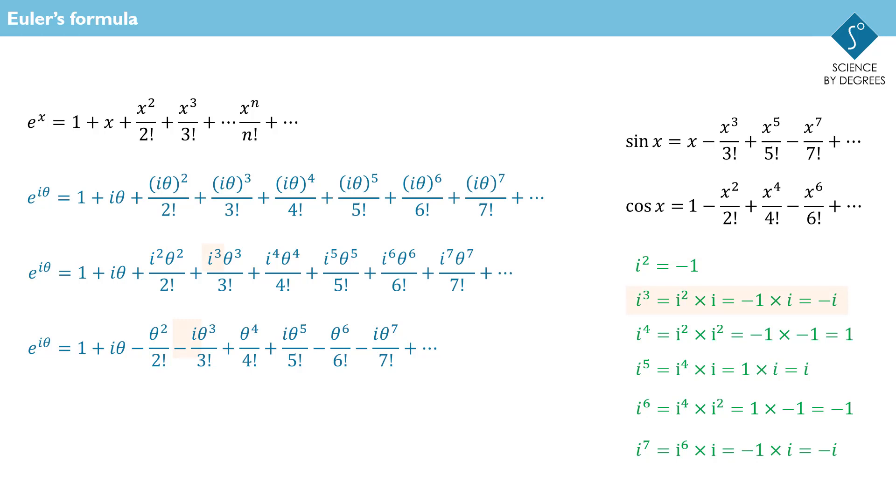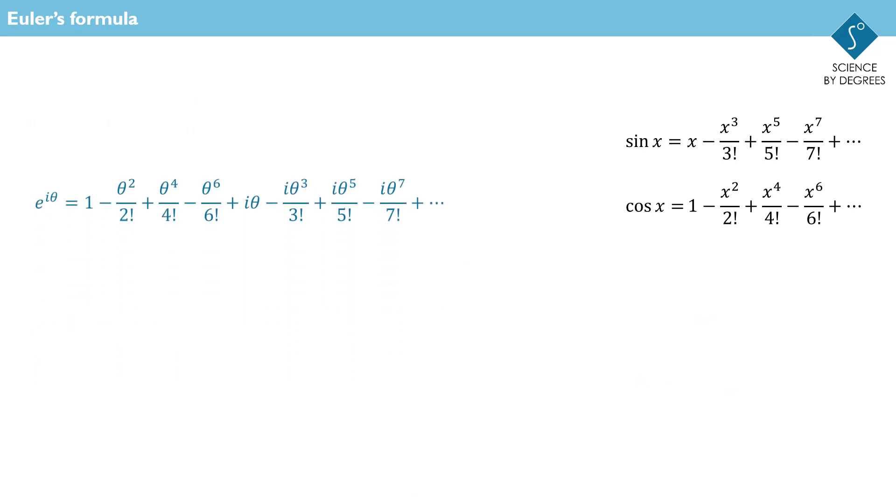i squared is minus 1, i cubed is minus i and so on. Half the terms now have an i and half don't, so let's separate them out into those two groups. And we might as well factorize out the i for the group that has them.